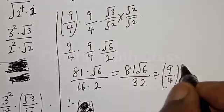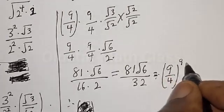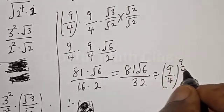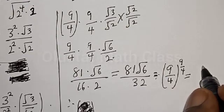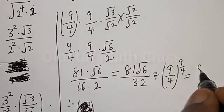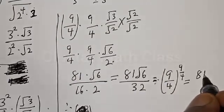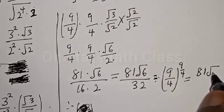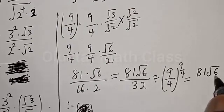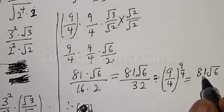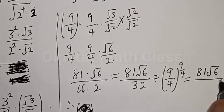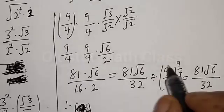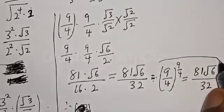Therefore, 9 divided by 4 raised to the power 9 divided by 4 is equal to 81 root 6 over 32. That is our final answer.